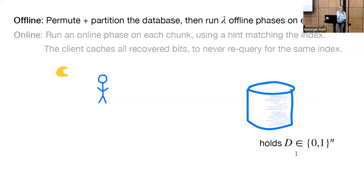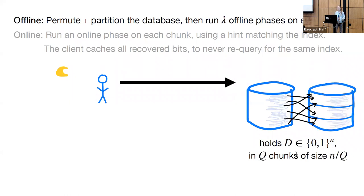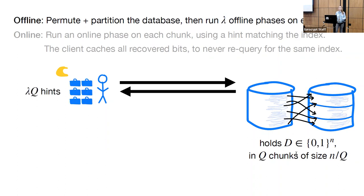We proceed as follows. In the offline phase, the client sends a permutation to the server, the server applies this permutation to the database and chunks the database into Q chunks each of size n/Q. Then our client and server run λ offline phases of the underlying PIR scheme on each of the Q chunks. The client recovers λQ hints — namely λ hints about the contents of each of the Q chunks.